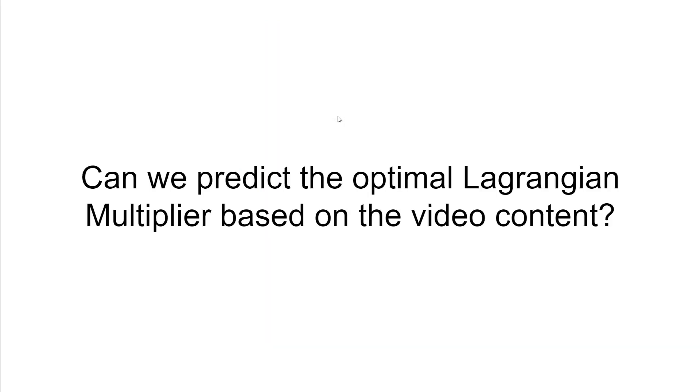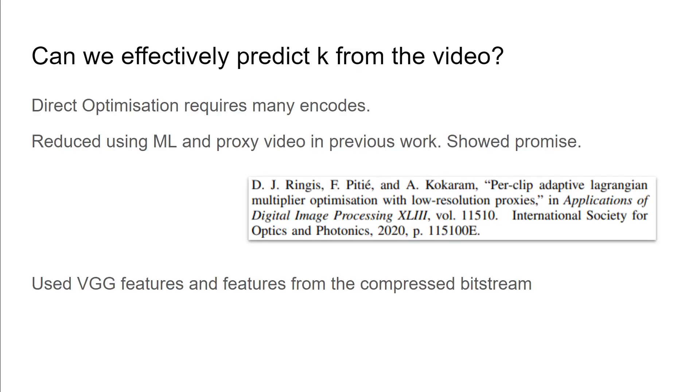The other question is: is there a way we could predict what the optimal Lagrangian multiplier should be based on the video content? In previous work, we looked at only a few features from the compressed bitstream using classical machine learning techniques. In particular, we looked at random forest implementation, and it showed some promise. We've expanded on the work here.